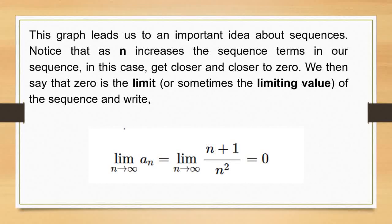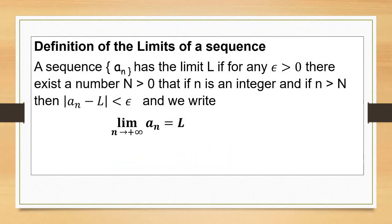Then we can say that zero is the limit of the sequence. The limit of a_n as n approaches positive infinity is equal to zero, where a_n is (n+1)/n². The formal definition: a sequence a_n has the limit L if for any epsilon greater than zero, there exists a number N greater than zero such that if n is an integer and n is greater than N, then the absolute value of a_n minus L is less than epsilon. We write this as: limit of a_n as n approaches positive infinity equals L.